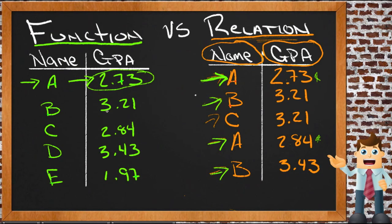If I say what's the GPA for the student whose last name starts with D, it will always be 3.43. So one way to think of functions versus relations is that functions can be trusted.